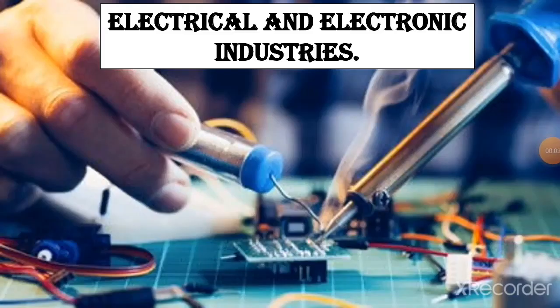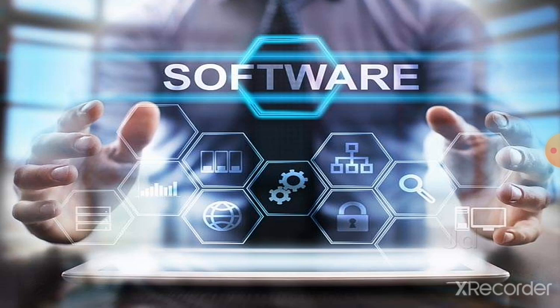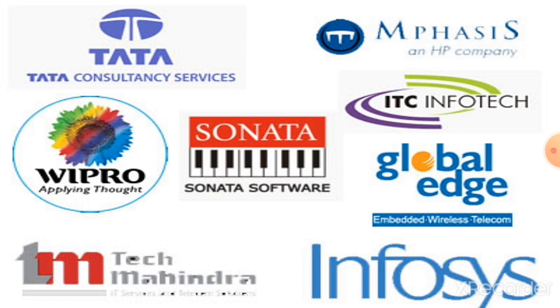Next, the electrical and electronic industry. Heavy electrical industry manufactures equipment used for power generation, transmission, and utilization. The electronic industry is made up of companies that design, manufacture, assemble, and service electronic products. Bangalore is the largest producer of electronic goods in India, hence it is called the electronic capital of India. Next, the software industry. India is home to some of the finest software companies in the world, reputed across the globe for their efficient IT and business-related solutions. Some of the IT companies present in India are Tata Consultancy, Wipro, and Infosys.